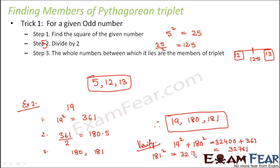And now we will find out 181 square which is equal to 32761. So we see that 181 square is equal to 19 square plus 180 square which proves that they are a Pythagorean triplet.